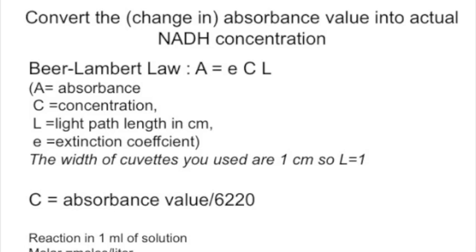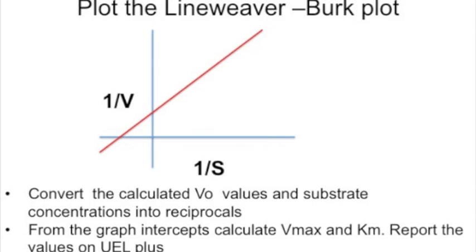It's easier to apply this calculation to the velocity you calculated rather than doing it for every point. You can then plot your Lineweaver-Burk plot after converting your velocities and your substrate concentrations into their reciprocals, because the Lineweaver-Burk plot is the plot of 1/V versus 1/S. From the graph, you should then be able to estimate KM and VMAX. Refer to your previous notes on how to calculate KM and VMAX from these plots.